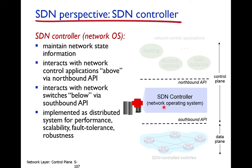The SDN controller maintains network state information — each switch sends its link state information to the controller, giving it the whole network view. The SDN controller interacts with SDN control applications via the northbound API, through which users specify requirements. It interacts with network switches via the southbound API, where OpenFlow is one option. Since a single server failure would crash the whole network, the SDN controller runs on multiple servers.